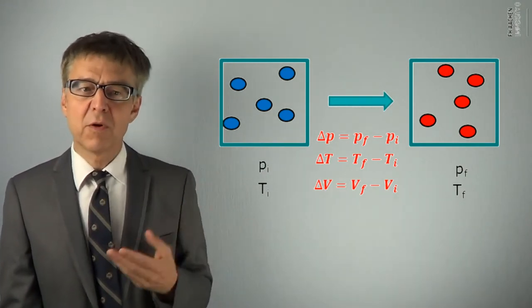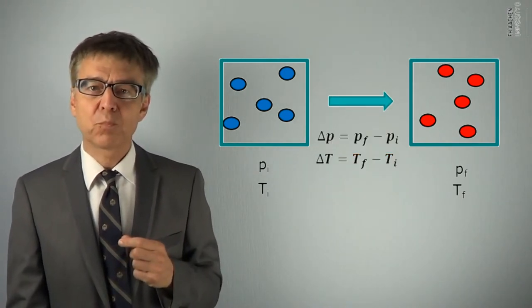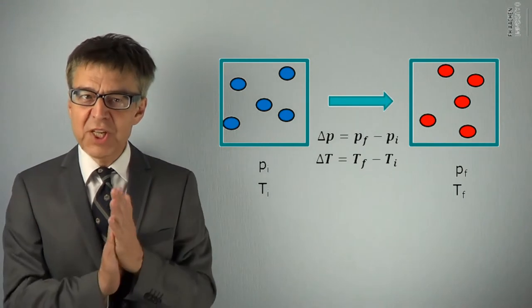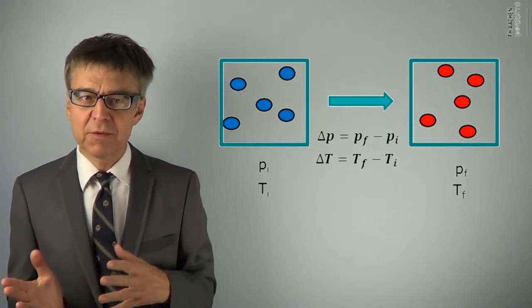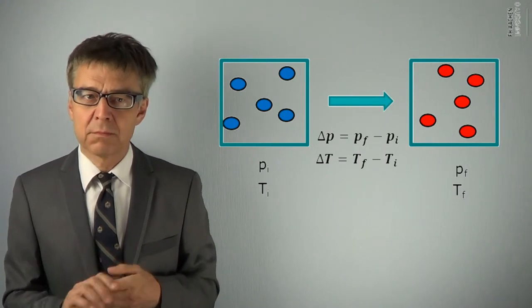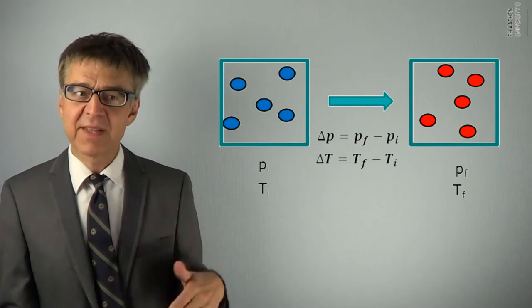Delta Rho is Rho final minus Rho initial and so on. The changes of the state variables, delta Z, can be positive or negative. The calculation is always final value minus initial value.